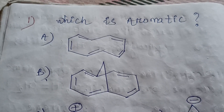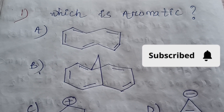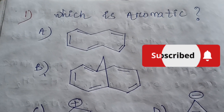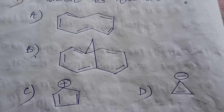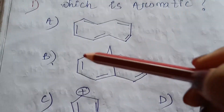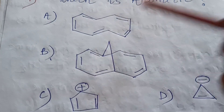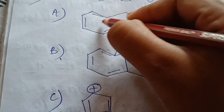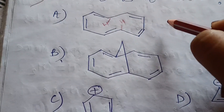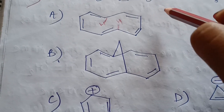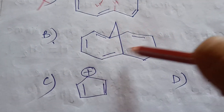Hi everyone, this is Part 2 of the SSP Lab Assistant question paper. Question number one: which is aromatic among the four compounds? Option A is a five pi-electron system, but it is not aromatic because the hydrogen causes repulsion, making the system non-planar. Since the system loses planarity, option A is eliminated.